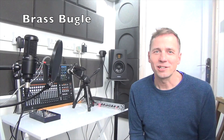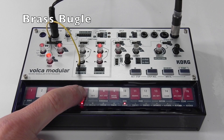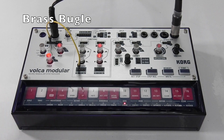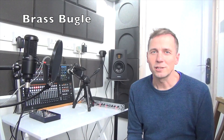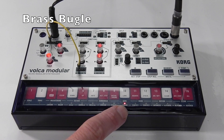This is a nice easy patch I call Brass Bugle. It uses the Function 1 wave to increase the ratio during the attack section of the sound, so as the attack ramps up the ratio amount ramps up. This one is best used played live or with the long gate setting on.